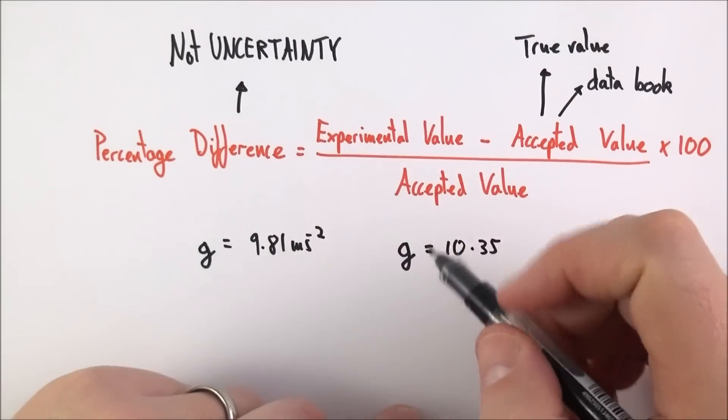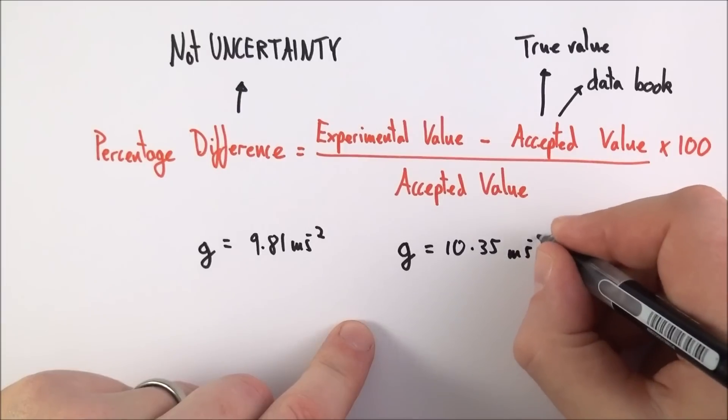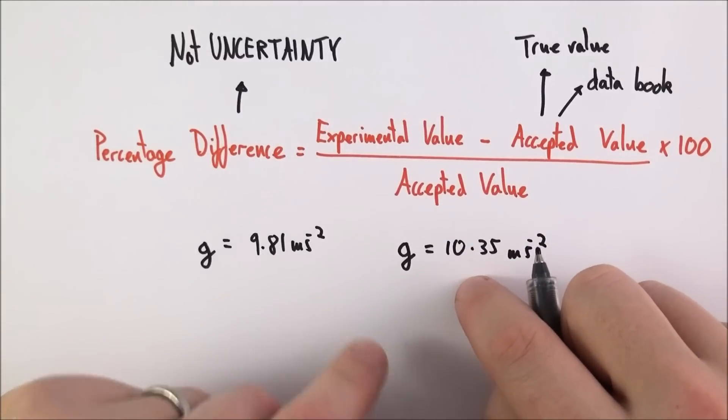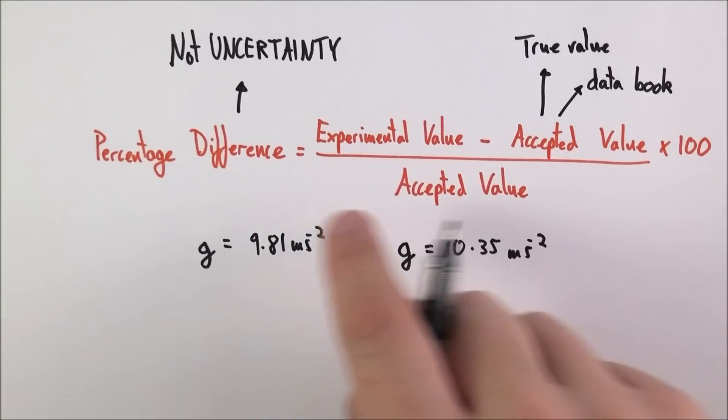Now this is not the same, but how close is that to the true value? Well, if your value is 10.35 meters per second squared, then we can look at your percentage difference between your value and the true value.